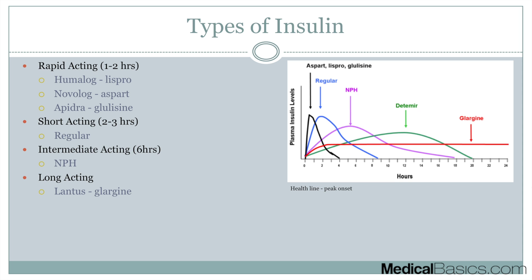The first thing is the different types of insulin, broken into four categories. First is rapid-acting insulin: lispro, aspart, and glulisine, with a peak time of about one to two hours. Short-acting insulin has a peak time of around two to three hours. Intermediate-acting is NPH, which peaks around six hours. And long-acting insulin, which we typically don't think of as having a peak.